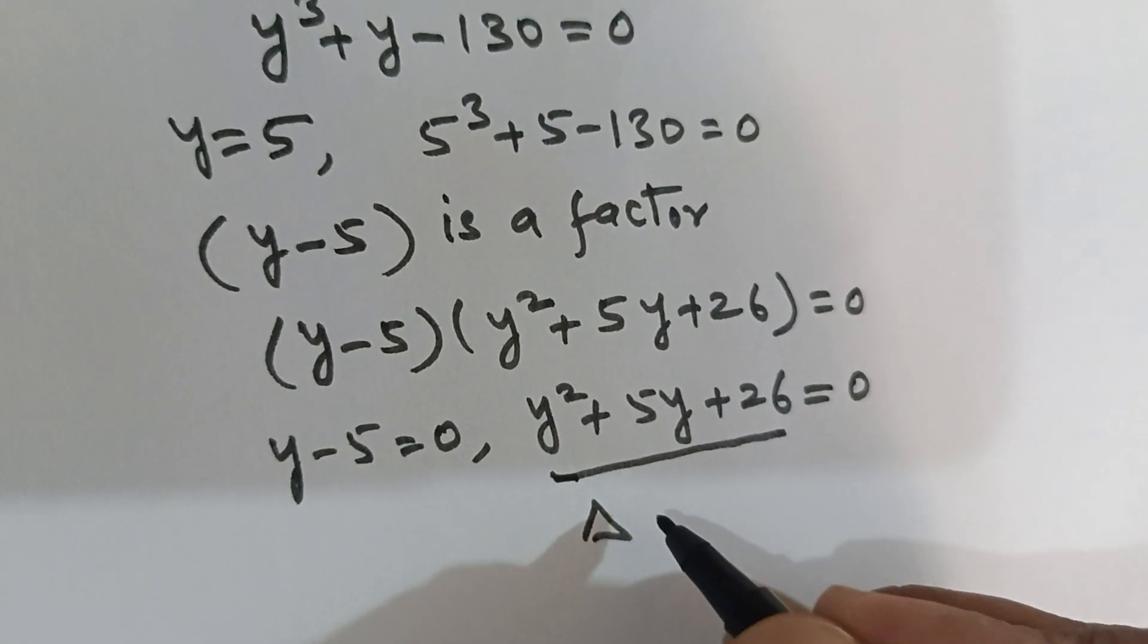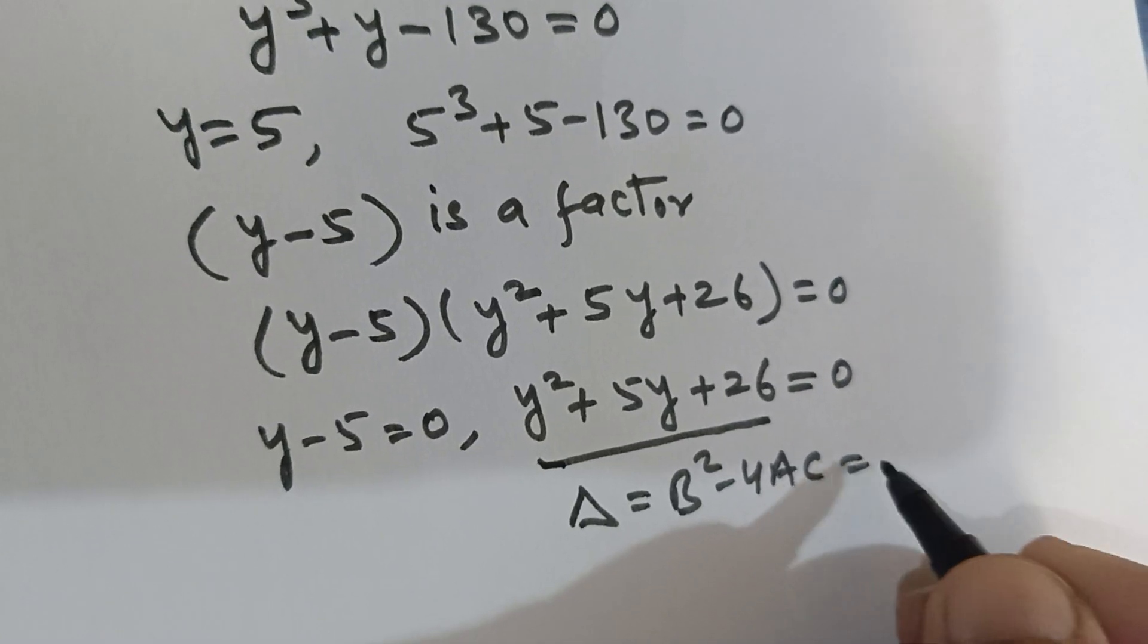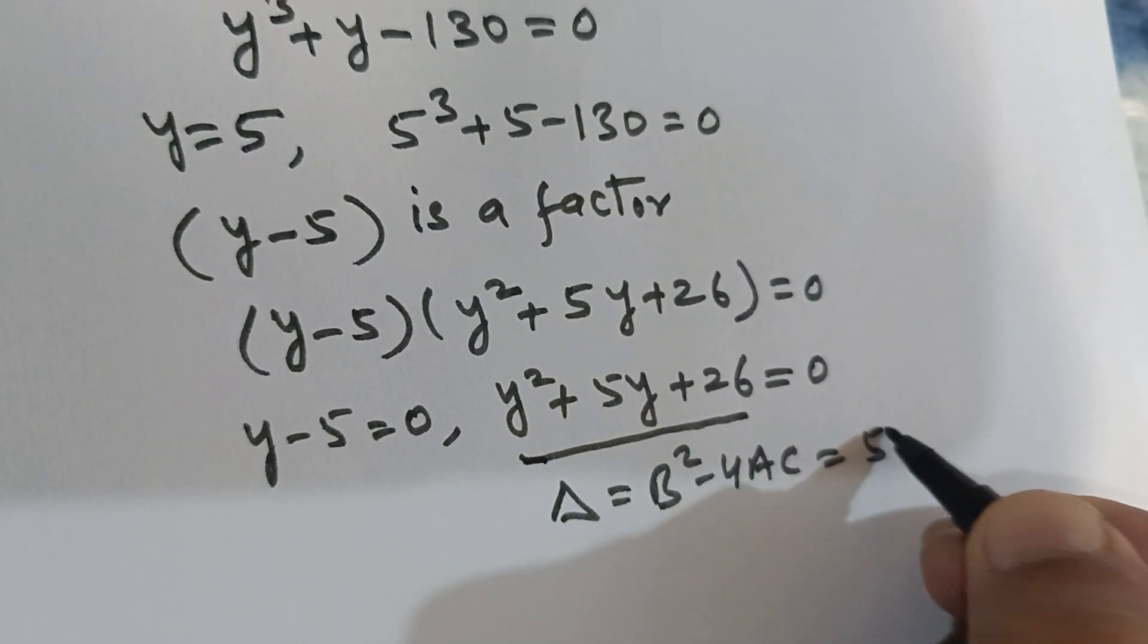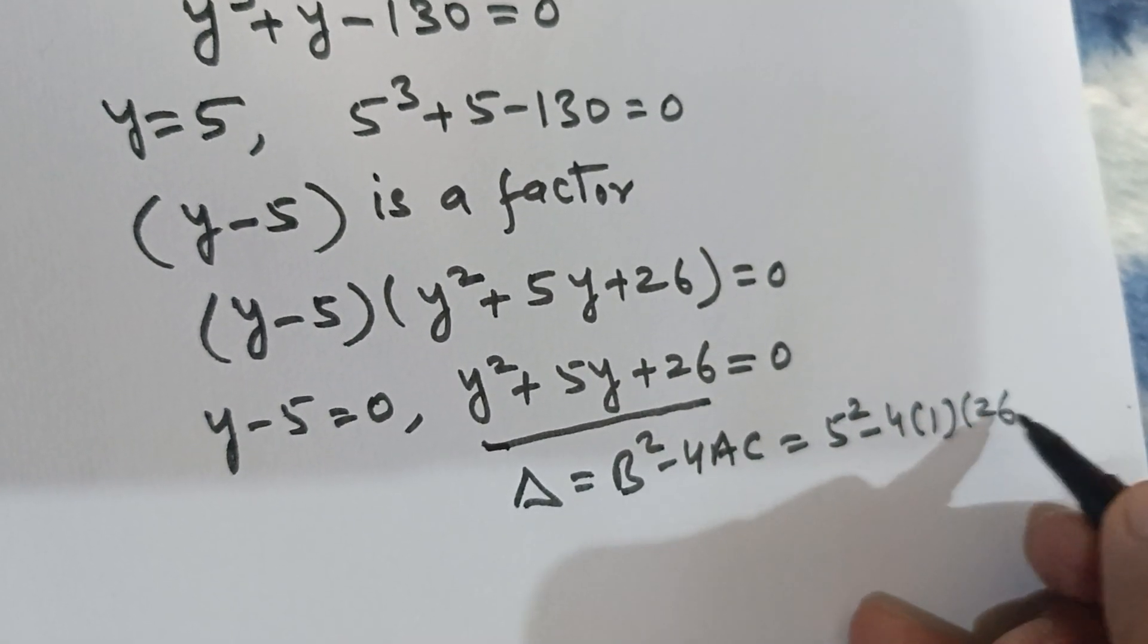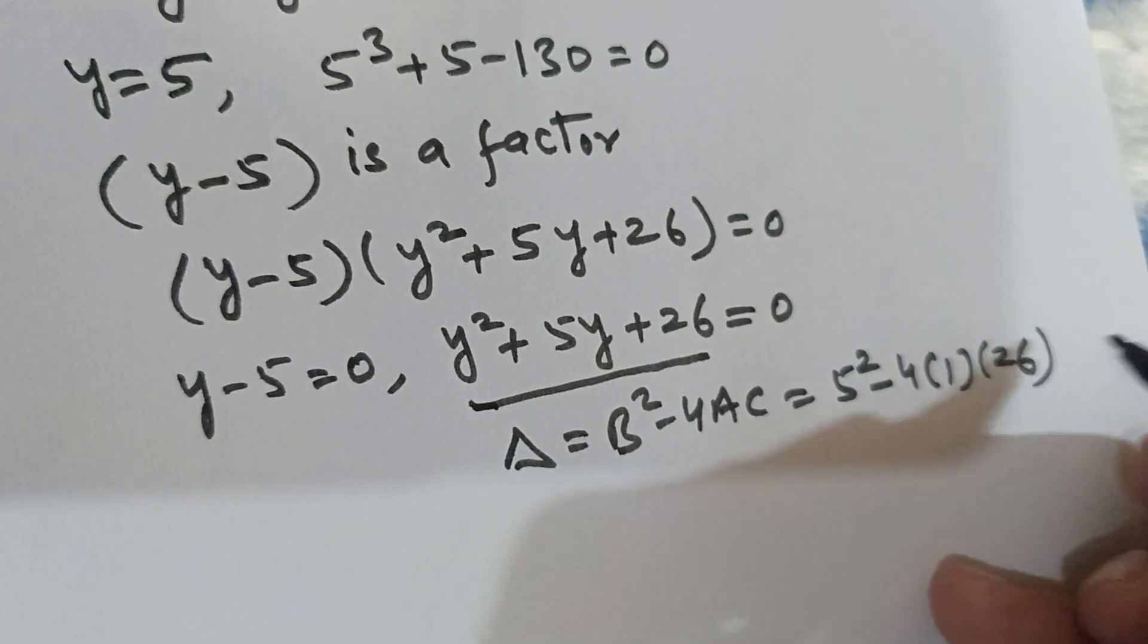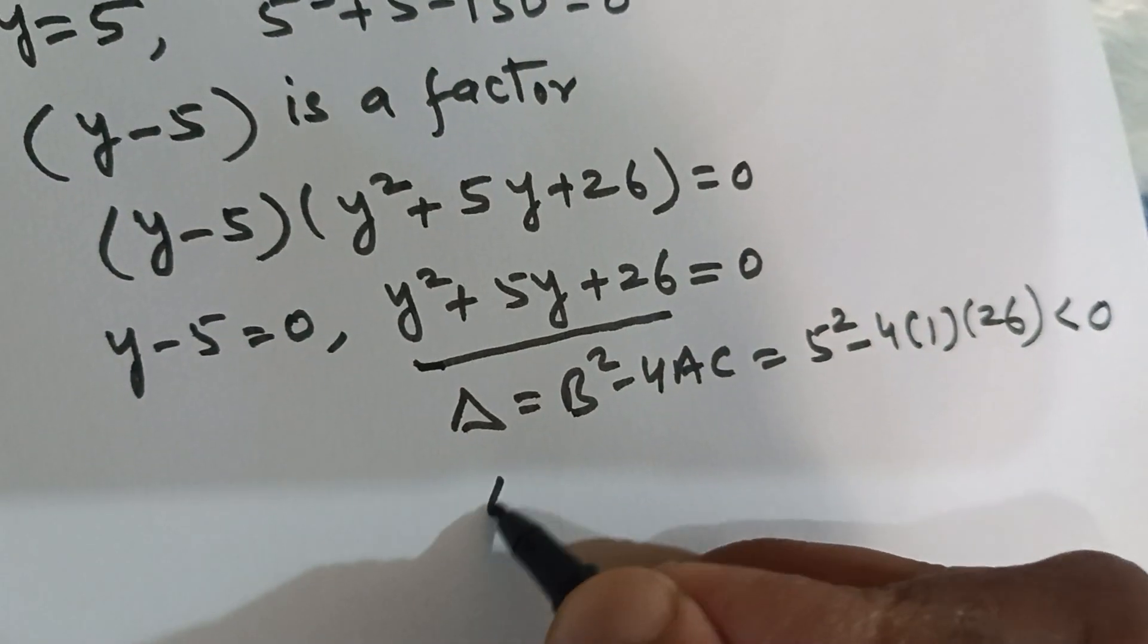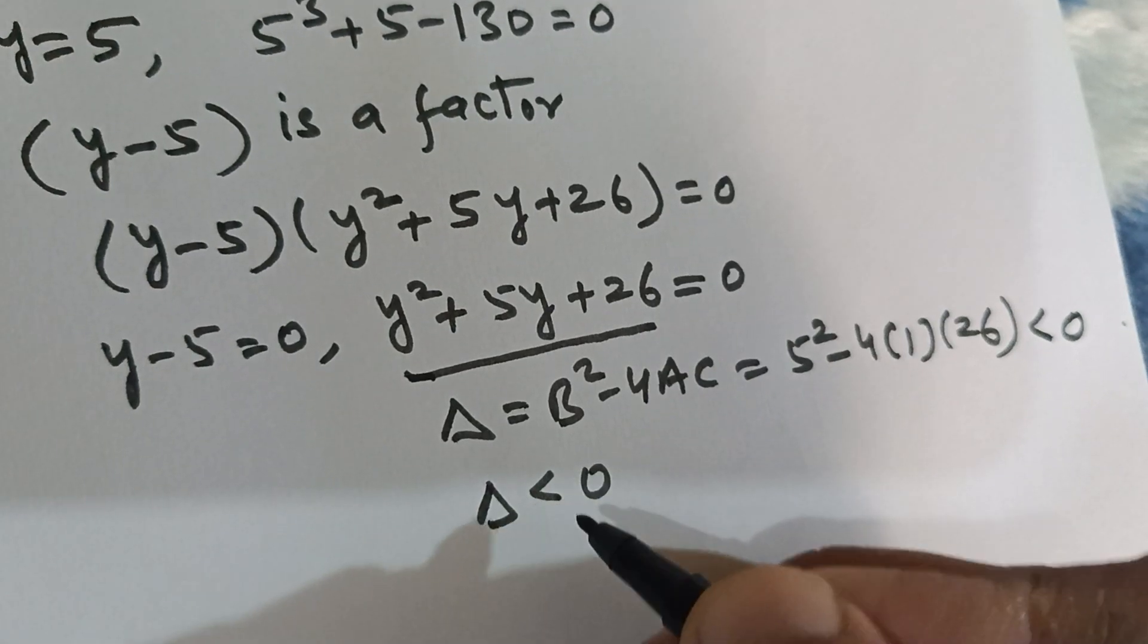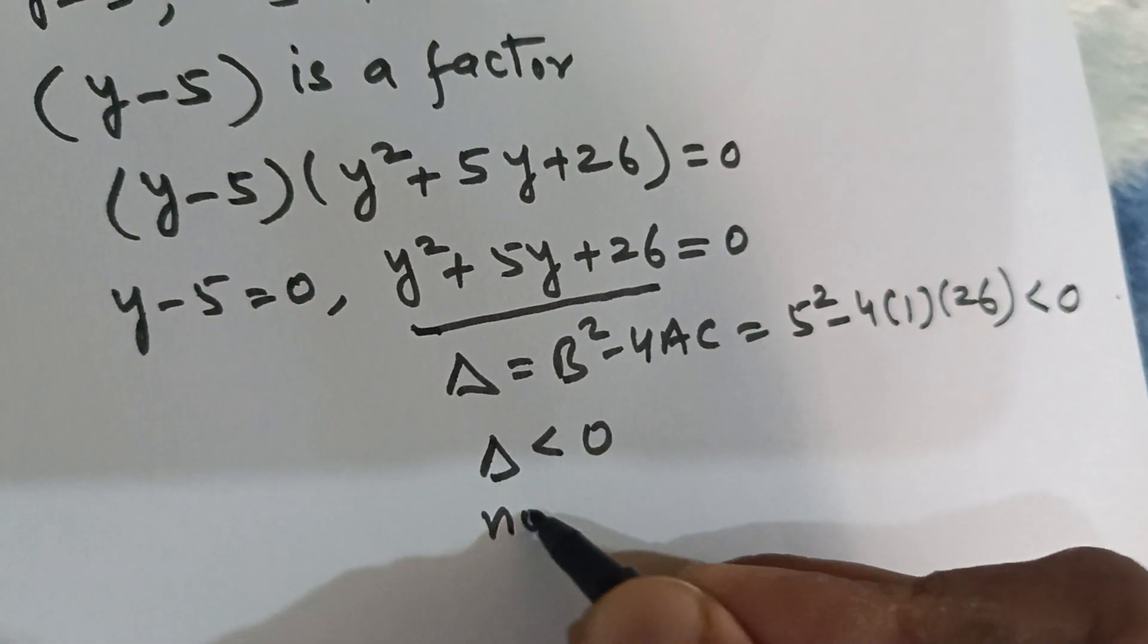The discriminant Δ = b^2 - 4ac = 5^2 - 4(1)(26), which is obviously less than 0. That means Δ is negative, hence we will have no real solution for this equation.